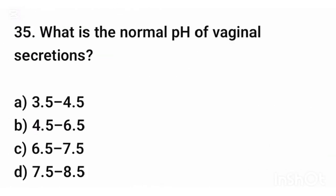Question number thirty-five. What is the normal pH of vaginal secretions? The correct answer is option A: 3.5 to 4.5.